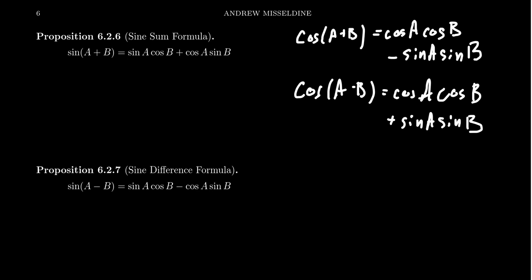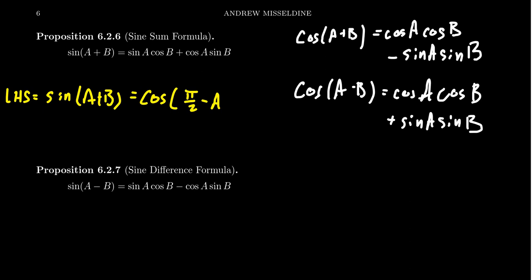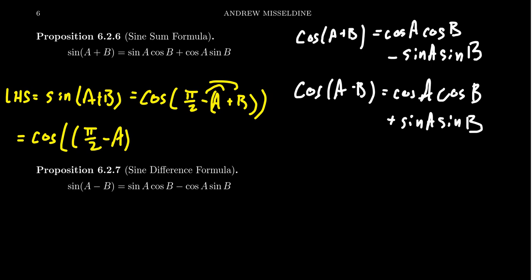Starting with the left-hand side, sine of a plus b. Using the co-function theorem, sine of a plus b is the same thing as cosine of pi halves minus a plus b. We can distribute this negative sign, so we get cosine of pi halves minus a, and then subtract b from that.